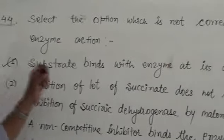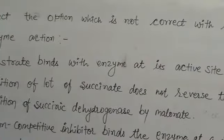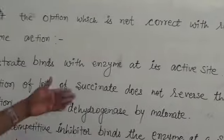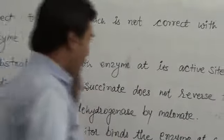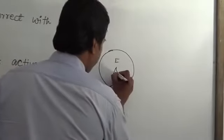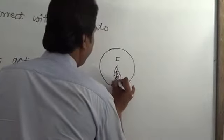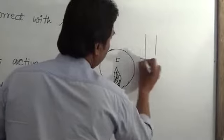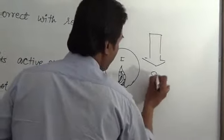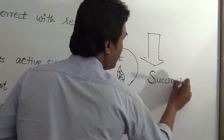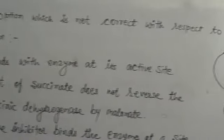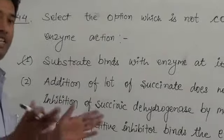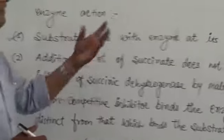Then second option: Addition of lot of succinate does not reverse the inhibition of succinate dehydrogenase by malonate. Malonate is the competitive inhibitor of the succinate substrate. When dehydrogenase enzyme binds with the malonate, then we add the succinate in system.